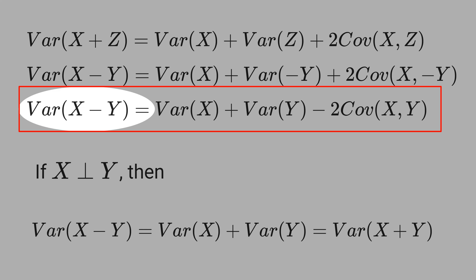We want to prove that variance of x minus y is equal to variance of x plus variance of y minus 2 times covariance between x and y.